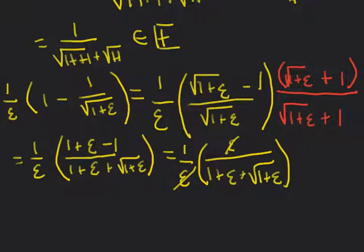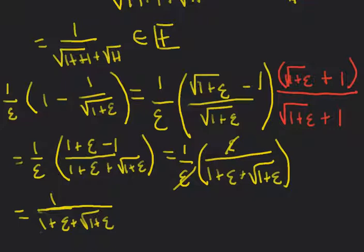Finally, the whole expression simplifies to 1 over 1 plus epsilon plus square root of 1 plus epsilon. The top is finite, and on the bottom, epsilon plus square root of 1 plus epsilon is an infinitesimal — but as soon as we add 1 to it, this becomes bigger than 1. Hence it's a finite number, and so this whole expression is finite but not infinitesimal.